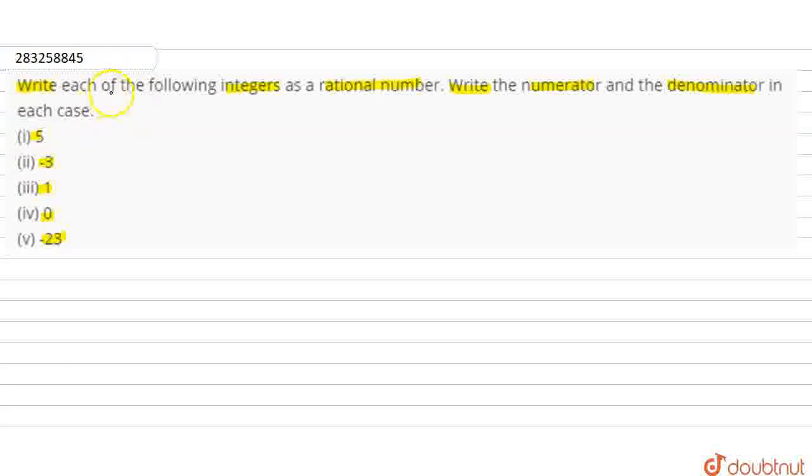So, in this question, we have been given integers that we have to convert into rational numbers. We need to write the numerator and denominator in each case.